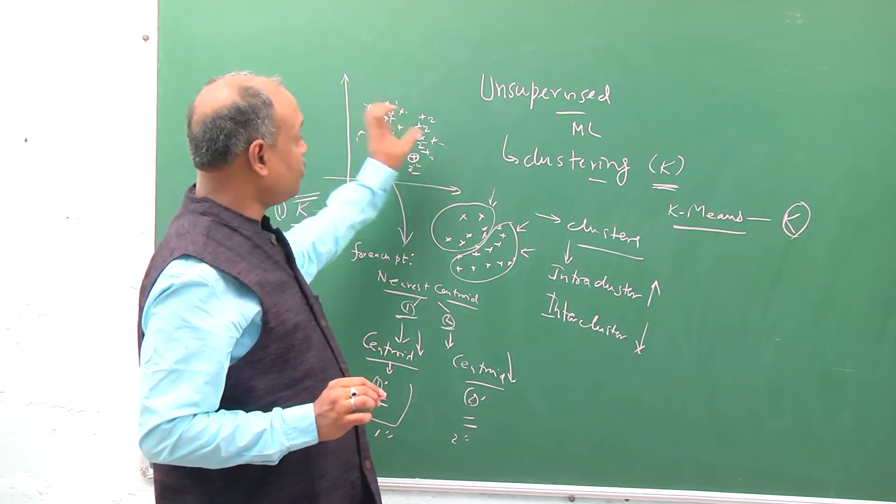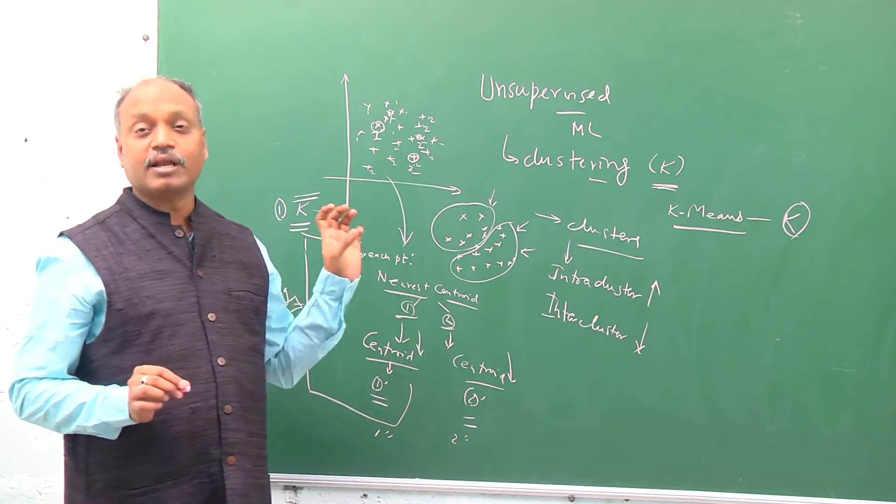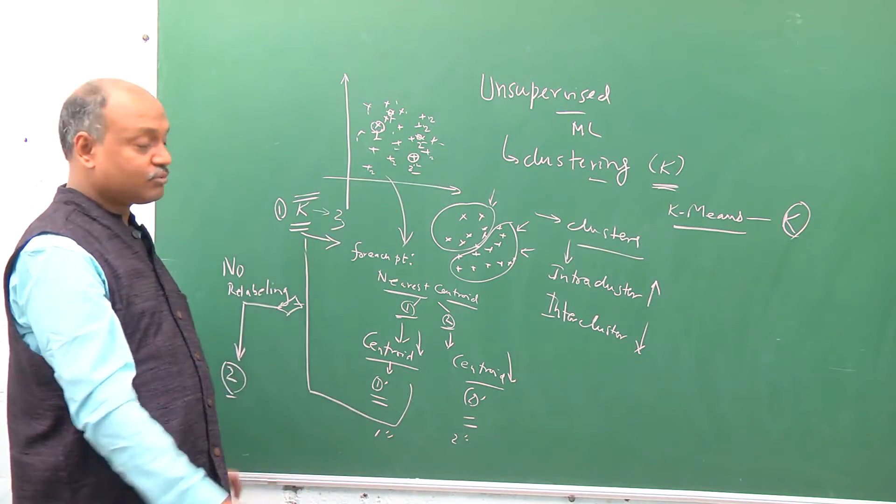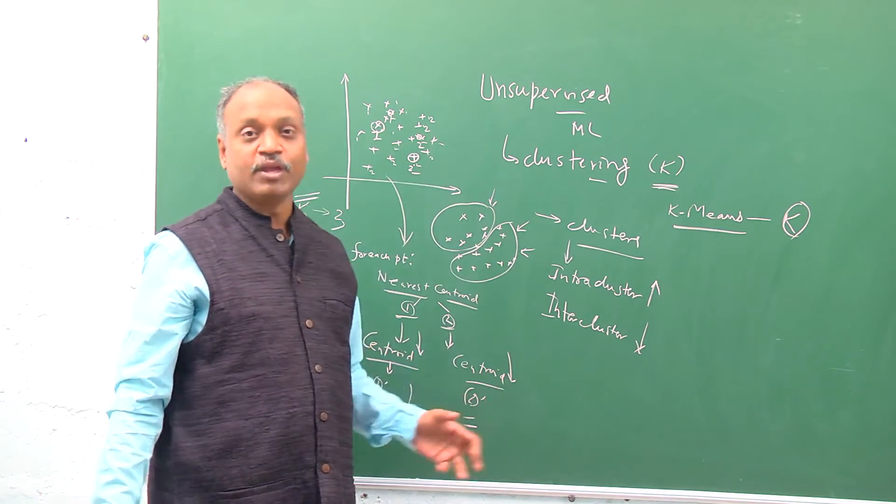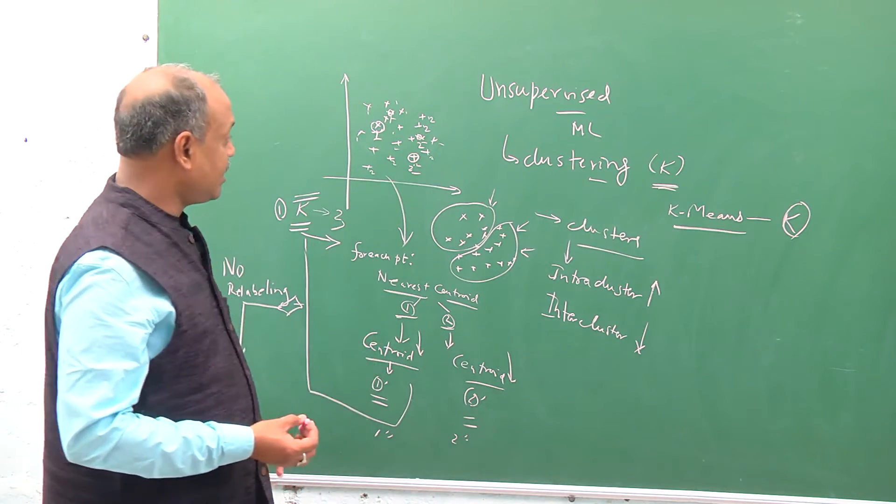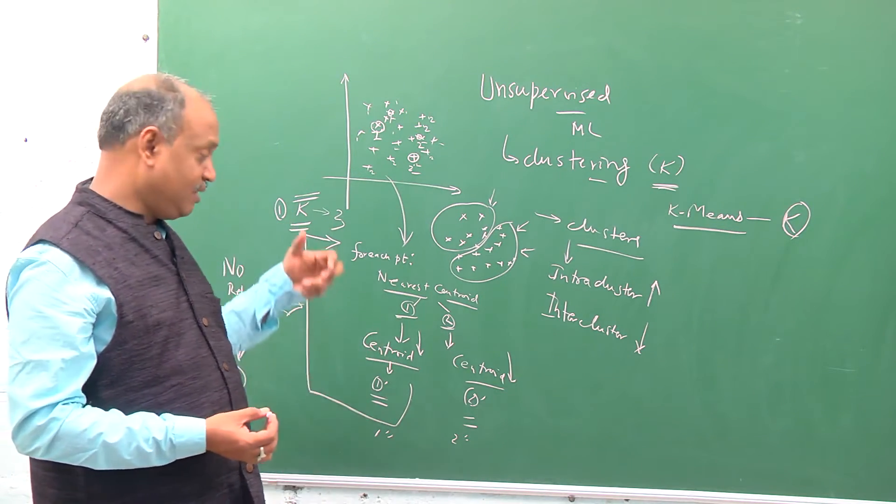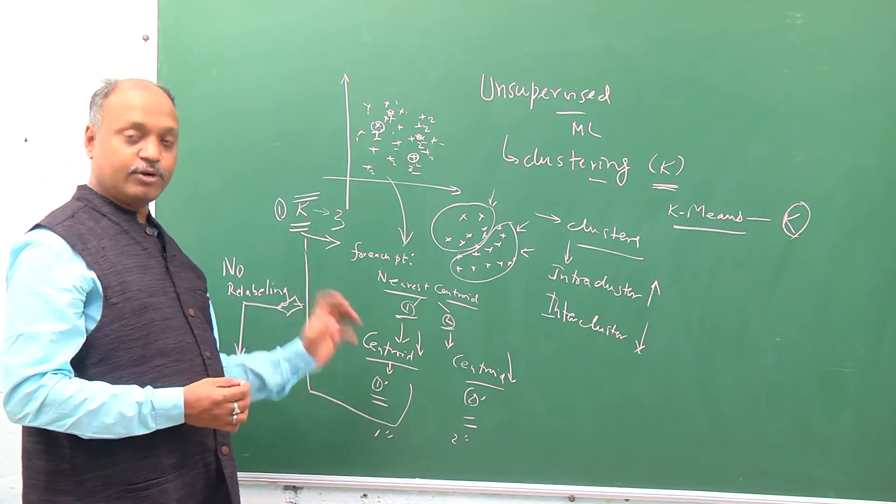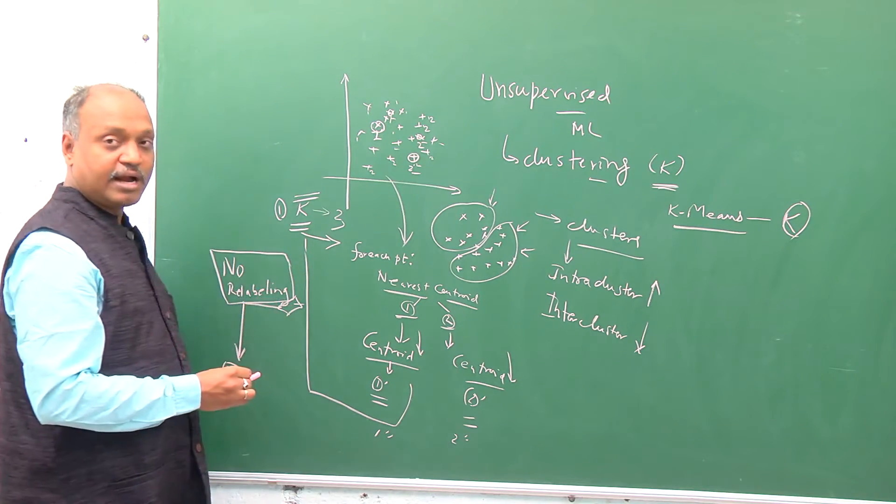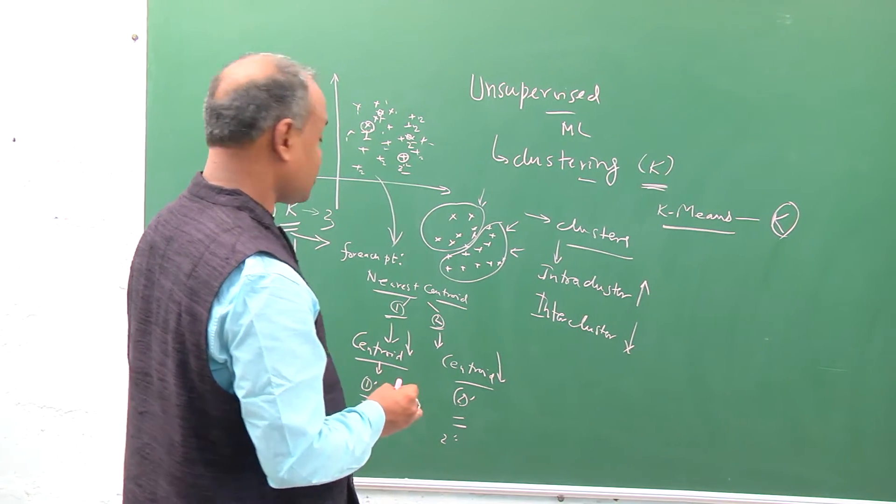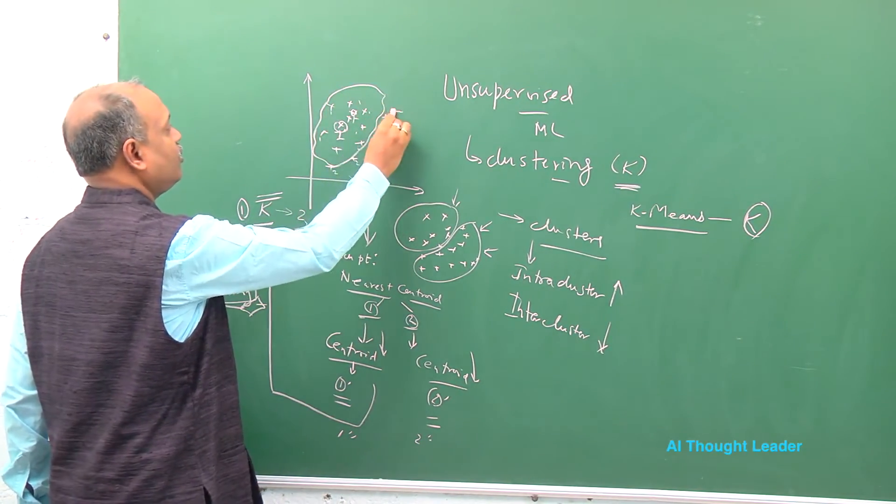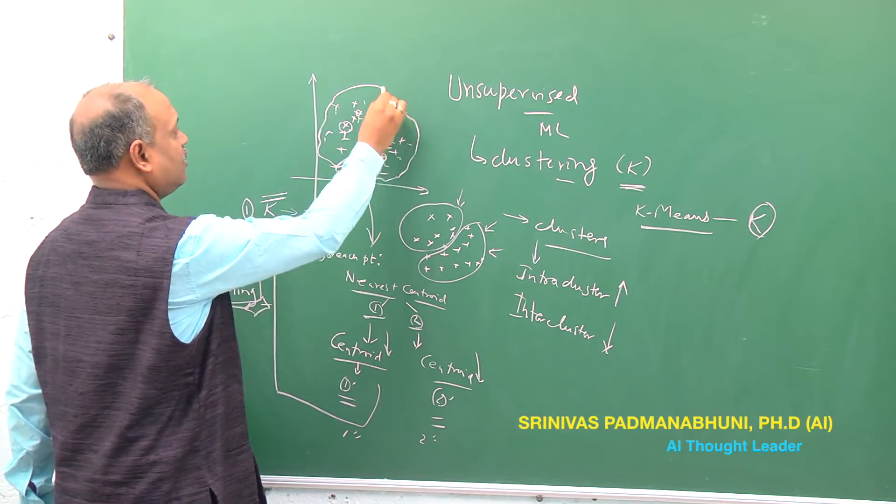Same thing we are going to repeat if k is three, we can do with three centroids. K is four, we can do with four centroids. K is five, we can do five centroids. But the beauty of this is that we can let the data itself decide where to stop by just checking the point of no relabeling happening at that iteration. Once you have the space, then we can stop.